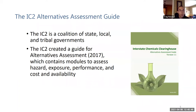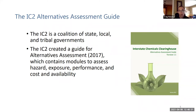The method we use to go about this is called alternatives assessment. The process is outlined in a guide by the IC2, the Interstate Chemicals Council — a coalition of state, local, and tribal governments. They created this guide which contains modules to assess hazard, exposure, performance, and cost availability of potential alternatives. It's a repeatable process that lays out exactly how you assess hazards and how you assess the performance of a potential alternative, to make sure you're finding something safer that meets all performance requirements needed in the product.